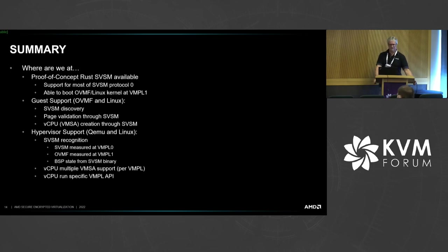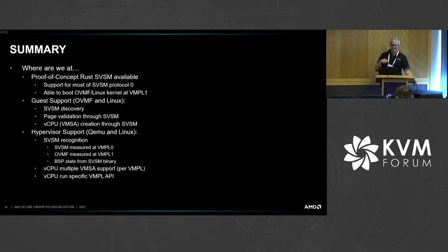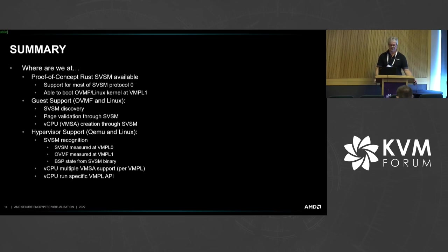As a summary of where we are now with the SVSM: we have a proof-of-concept Rust version up and running that has support for most of what's called the protocol zero versions of the functions. We're able to boot a multi-vCPU OVMF Linux guest at VMPL 1. The guest support requires discovery of the SVSM, page validation through the SVSM, and vCPU creation through the SVSM. The hypervisor support requires recognition of the SVSM binary, measuring it at VMPL 0, then switching to measuring the OVMF BIOS at VMPL 1, and booting the SVSM BSP instead of the BIOS BSP.